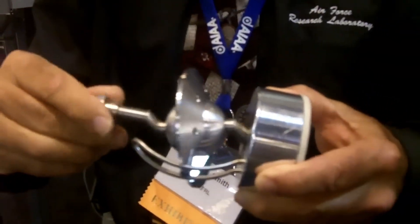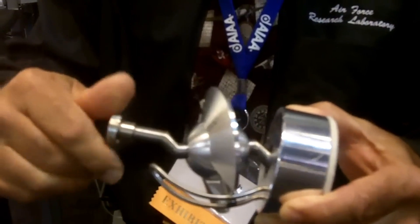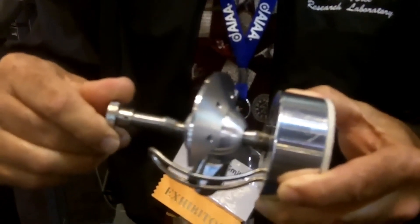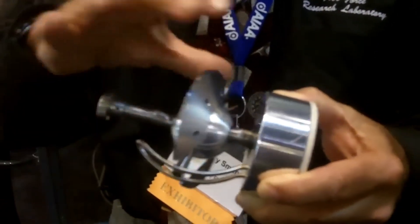McMasters is currently developing the disc engine, and according to their claims their variation will be able to run on a hydrogen and oxygen mixture, producing an output power of over 200 horsepower.